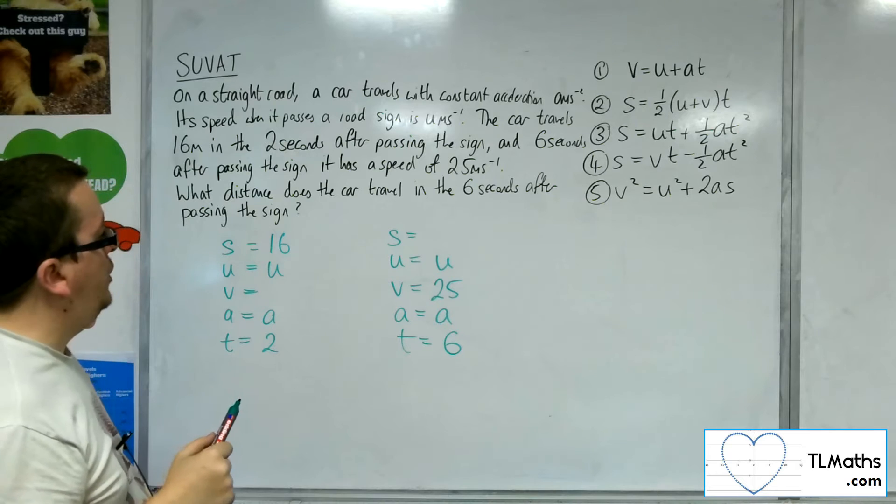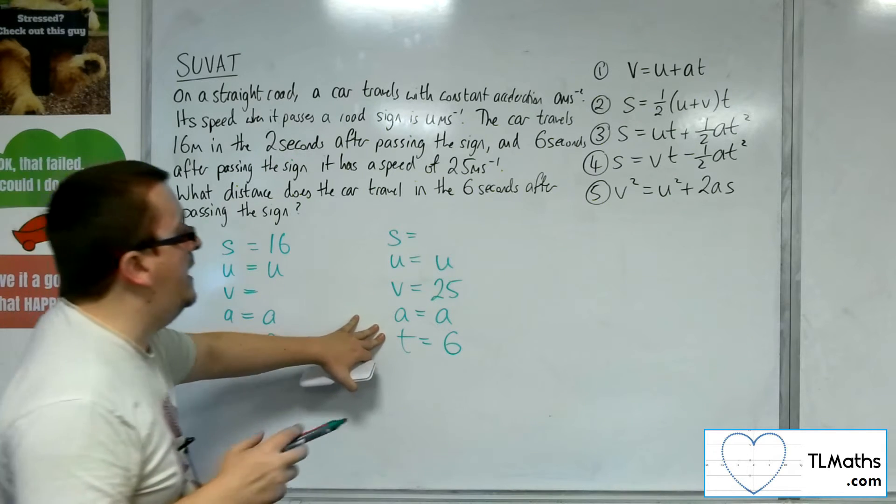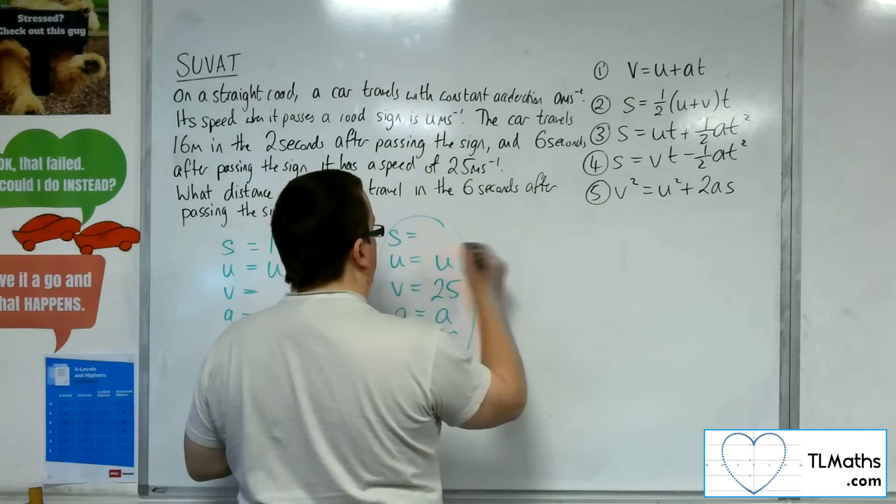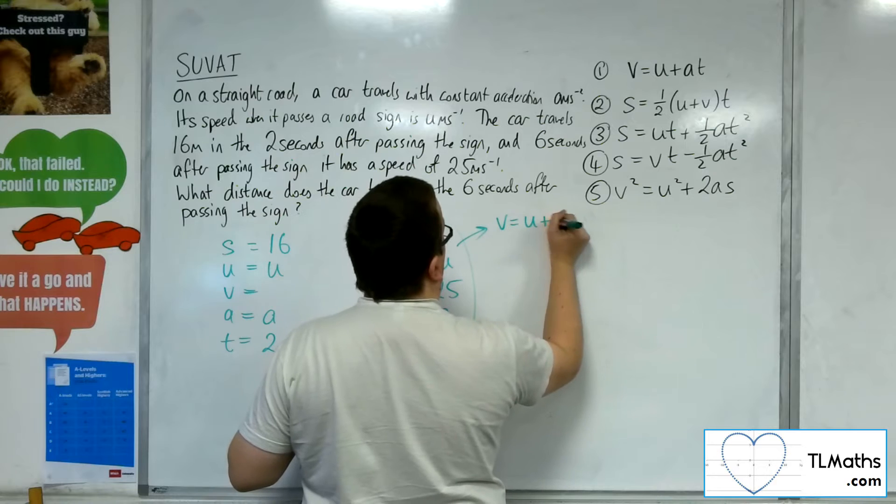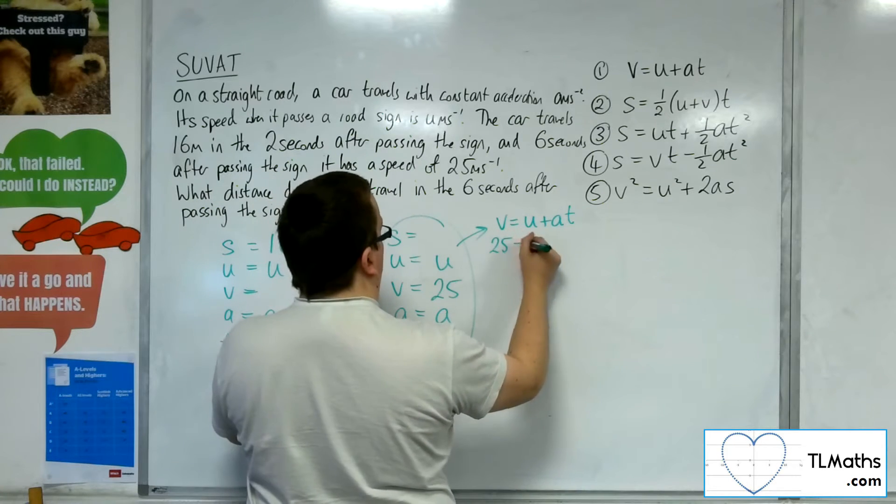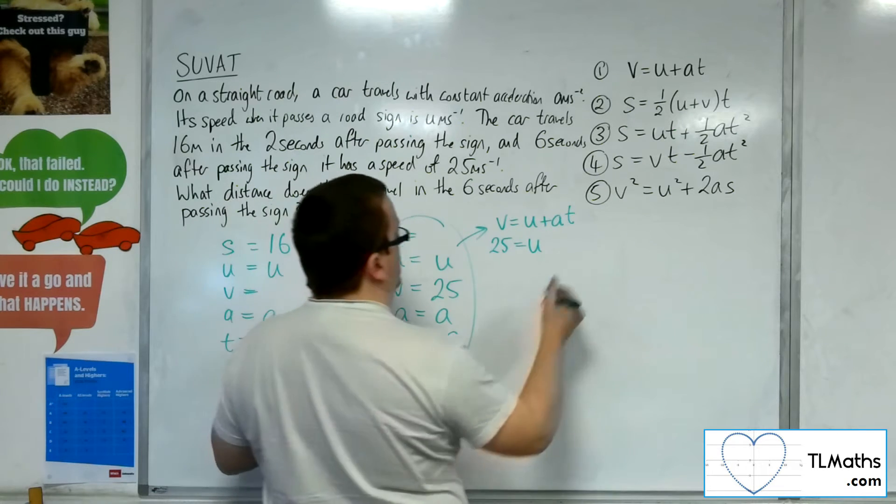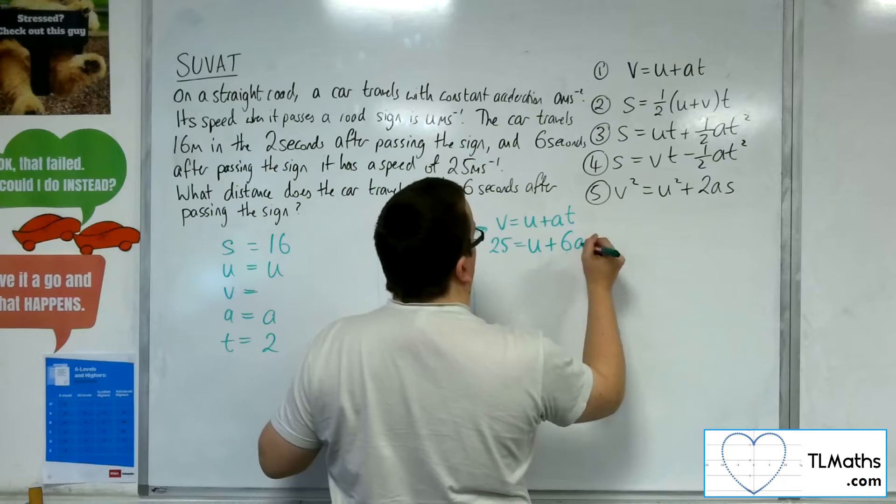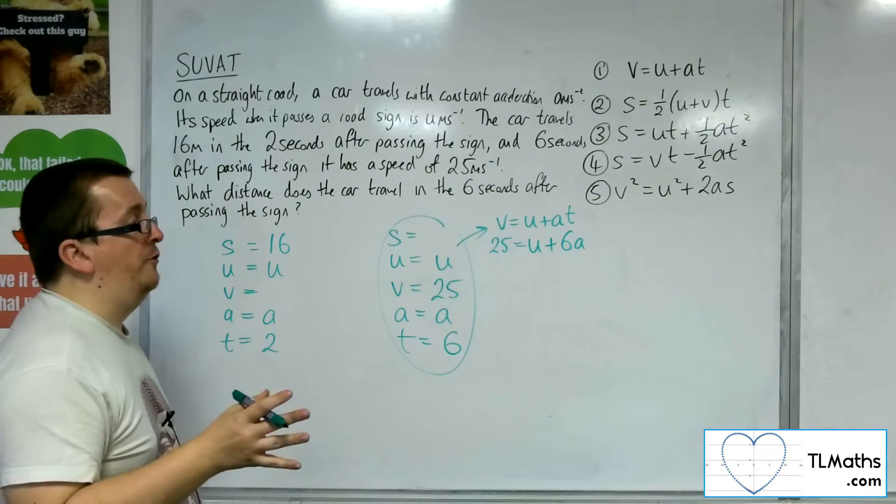We could use that for this bit of information here. So using that then we can say v equals u plus at. So 25 is equal to u plus a times t so 6a. So that gives me an equation with just u and a involved now.